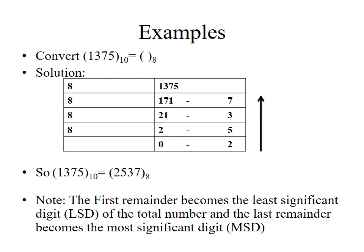The first remainder becomes the least significant digit (7), and the last remainder becomes the most significant digit (2). In a number system, we have least significant and most significant digits moving from right to left. So we have successfully converted the decimal number 1375 to the octal number 2537.